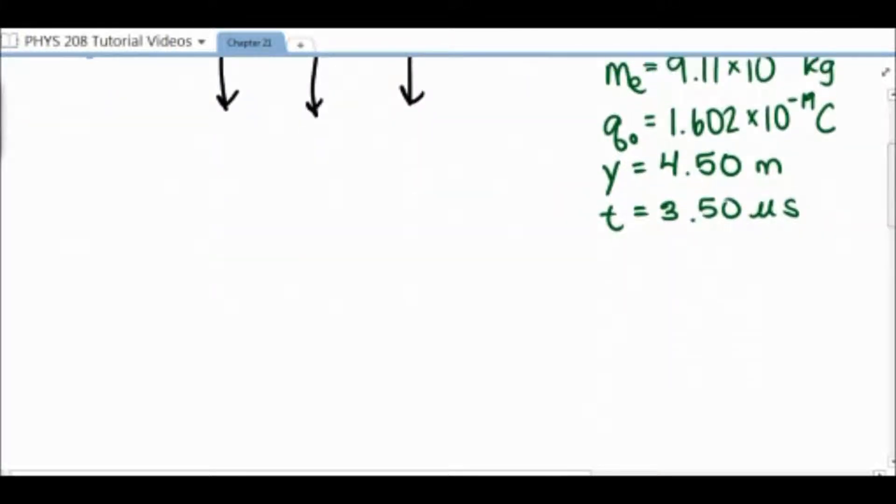Okay, so let's go ahead and start working out the problem. We need to start with our equations. The first equation for the electric field we're going to look at is E equals F over Q naught.